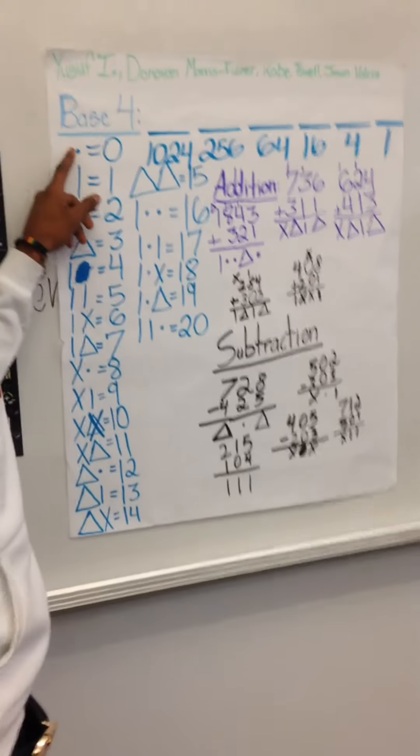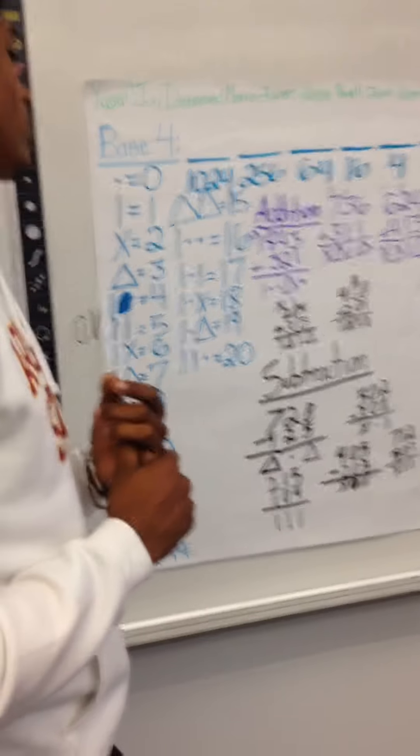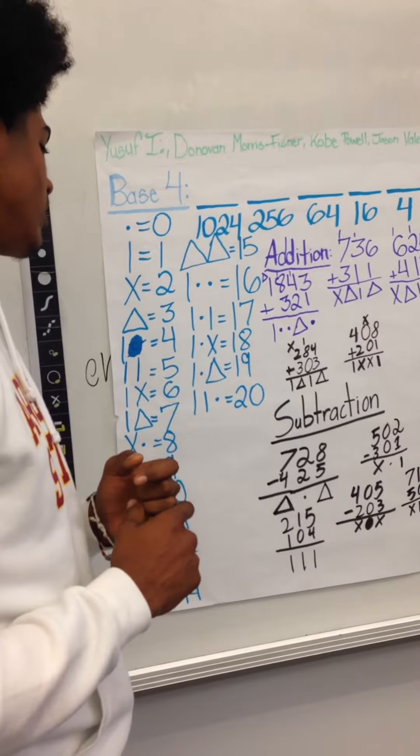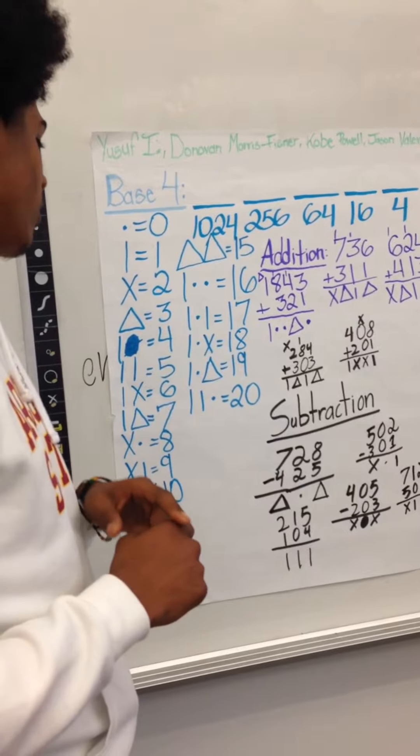The symbols we picked: dot equals zero, one equals one, then x equals two, triangle equals three, one dot equals four.